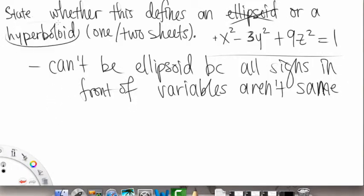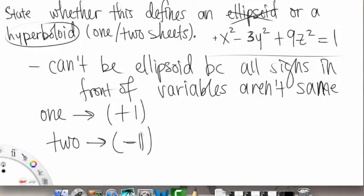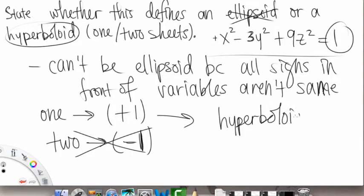So now it has to be a hyperboloid, but now we have to determine whether it's one or two sheets. It is one sheet if we have that plus one on the right side, or on one of the sides, right? And then it would be two sheets if we have a negative one on the right side. So if we look at our equation here, we have a positive one, so it must be a one sheet hyperboloid. It can't be the two, so this is going to be a hyperboloid, and then a one sheet. Alright, next question.